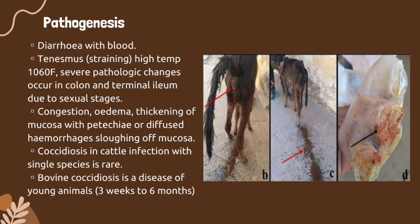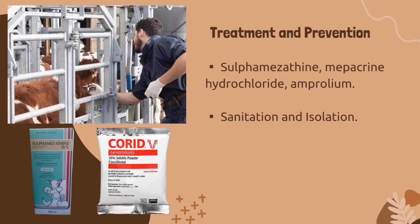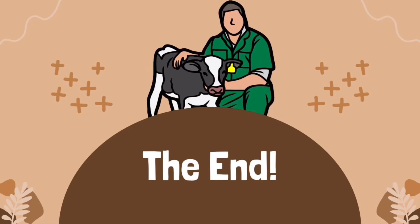Bovine coccidiosis caused by Eimeria bovis is a disease of young animals, three weeks to six months old. Infection with a single species is rare. For treatment and prevention, medications such as sulfamethazine, mepacrine hydrochloride, and amprolium are helpful, along with sanitation and isolation. That concludes today's video — I hope you have learned a lot. Thank you and God bless.